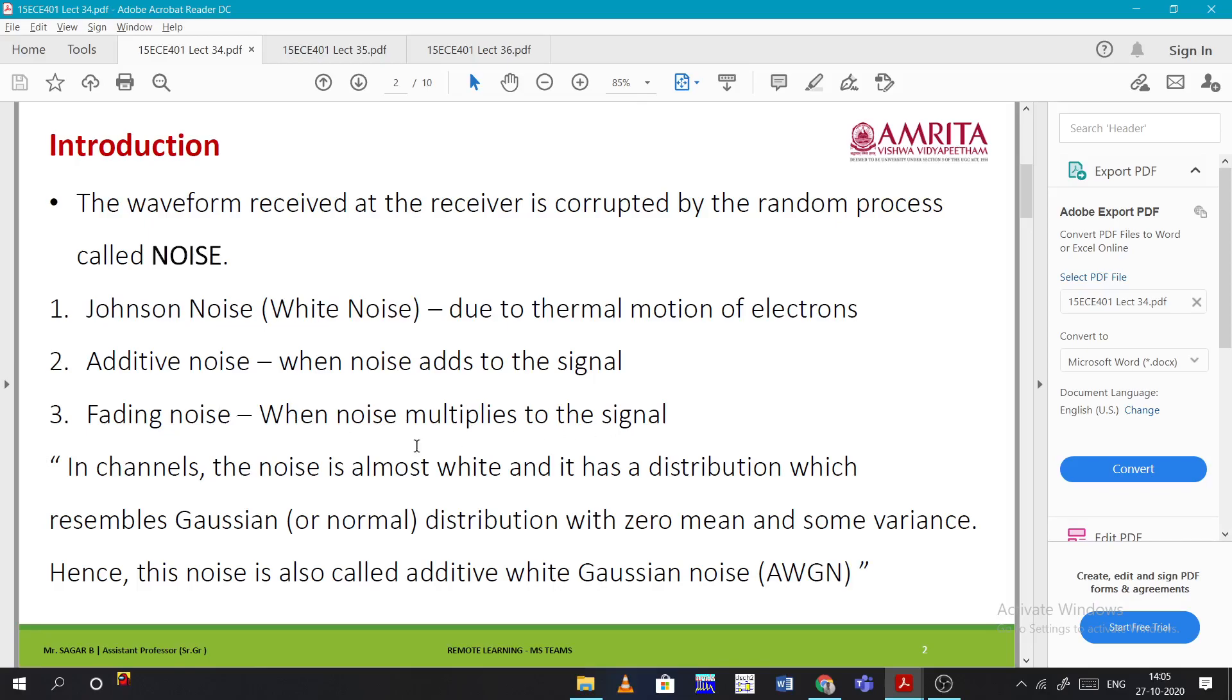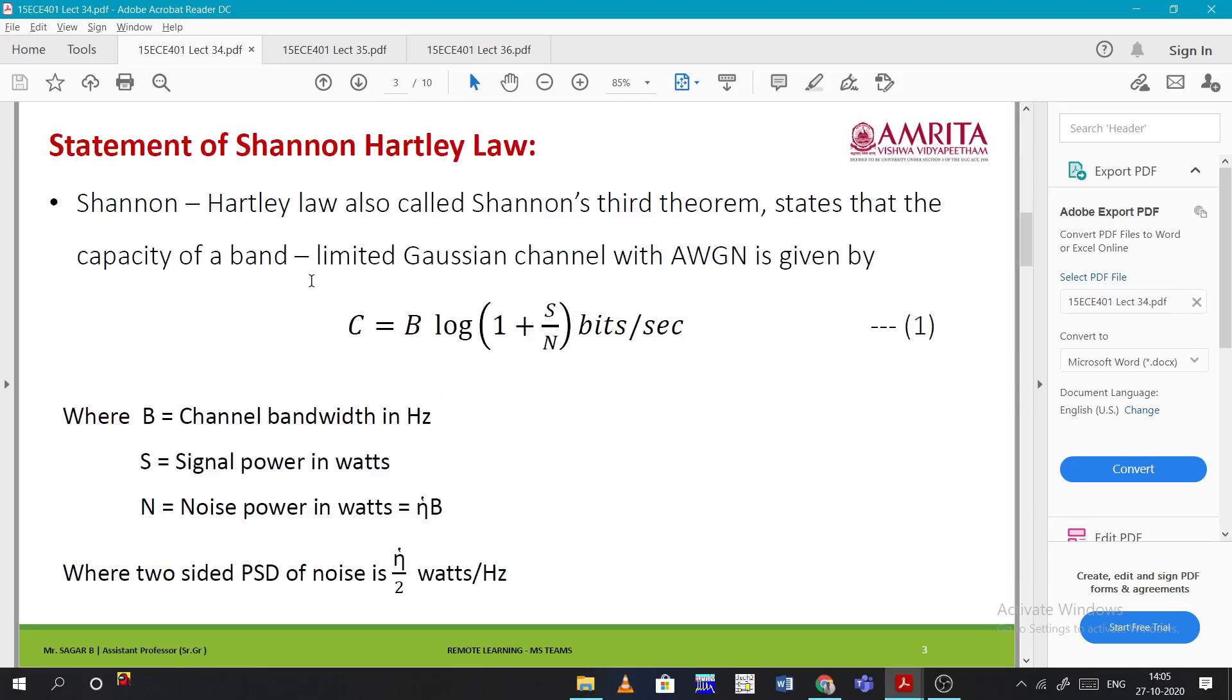Additive noise is when noise adds to the signal. Fading noise is when noise multiplies to the signal. In this channel, the noise is almost white and is distributed which resembles Gaussian with zero mean and some variance. Hence, this is also called additive white Gaussian noise (AWGN).